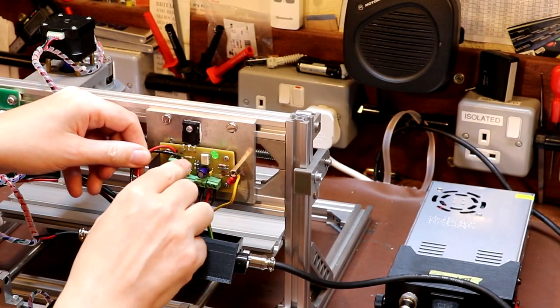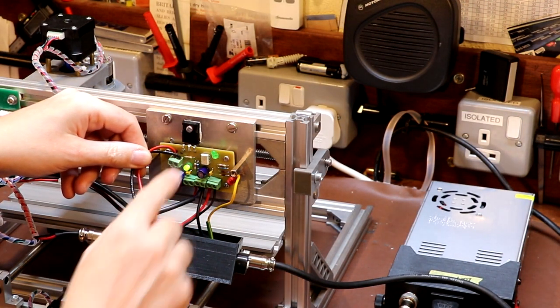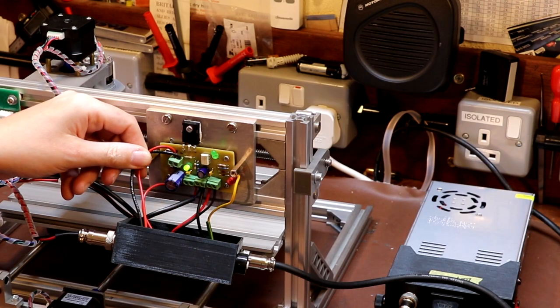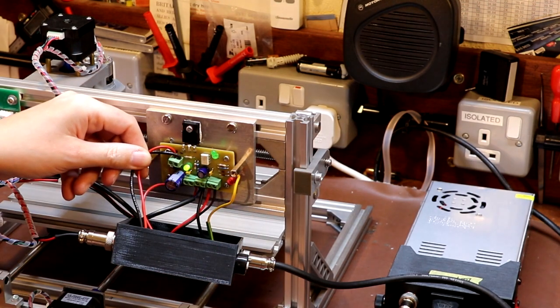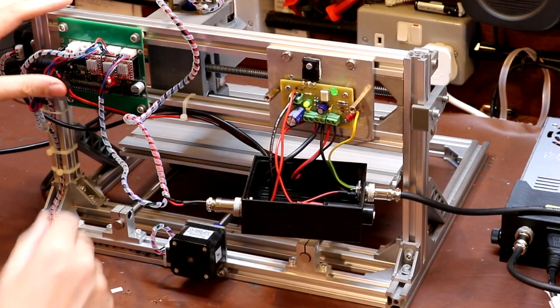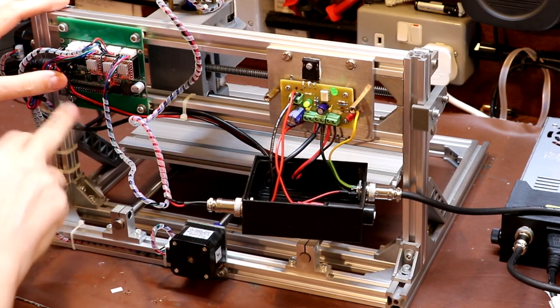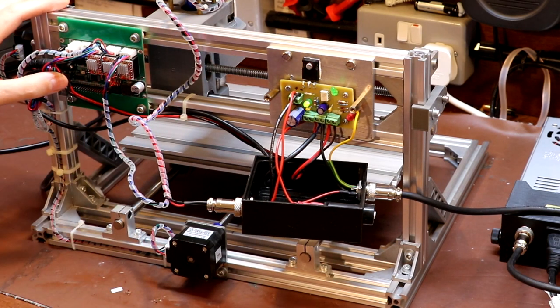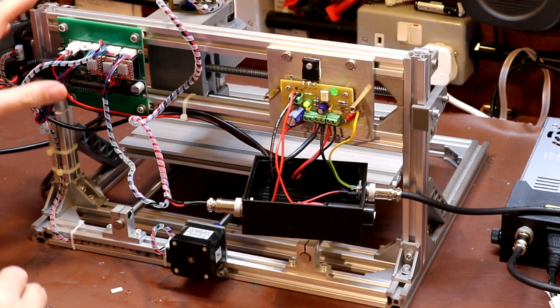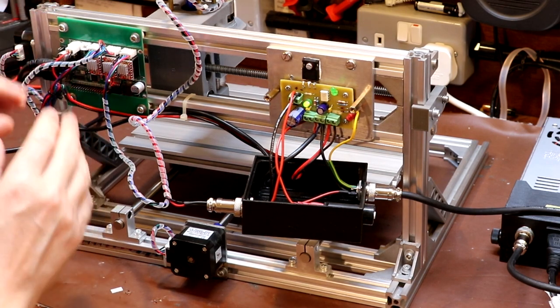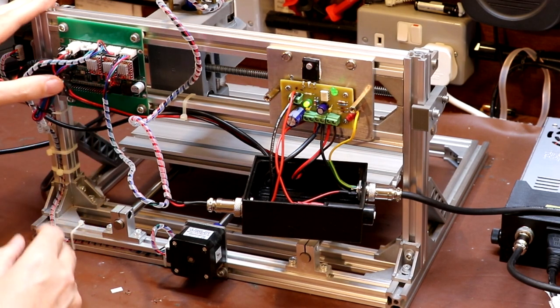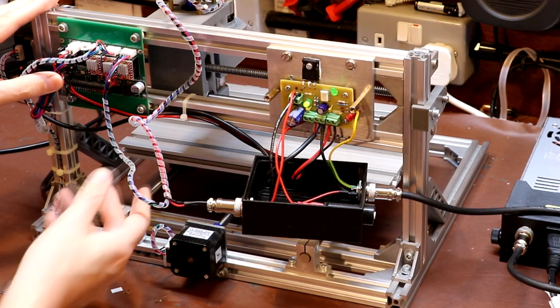Okay, so I can see that the little power indicator LED is actually illuminated on our spindle control PCB, so that means that we're getting 24 volts. And our Gerbil control board has also got some indicator lights on it because I think that lights up whenever you plug it into the USB.